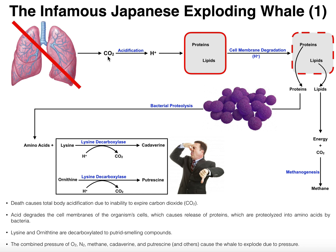One thing that happens to carbon dioxide if you let it sit for some amount of time is it can actually convert into acid. If you want to see the exact equation, you can google the bicarbonate carbonic acid buffering system — through a mechanism very similar to that, carbon dioxide can be turned into the H+ ion, or H3O+. That's the acidification that occurs inside the body of the whale, because the whale can no longer exhale CO2, so the CO2 acidifies into acid.